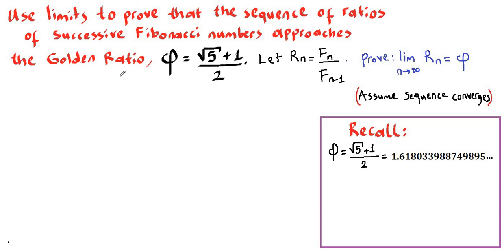Hello everybody. In this video we're going to prove that the sequence of ratios of successive Fibonacci numbers approaches the golden ratio, denoted by the Greek letter phi, which is the square root of 5 plus 1 divided by 2. So let r sub n be equal to f sub n divided by f sub n minus 1, and we will prove that the limit as n goes to infinity of this ratio approaches phi.